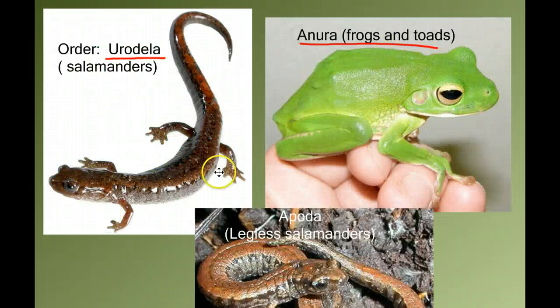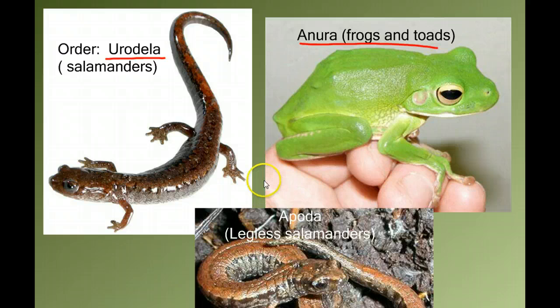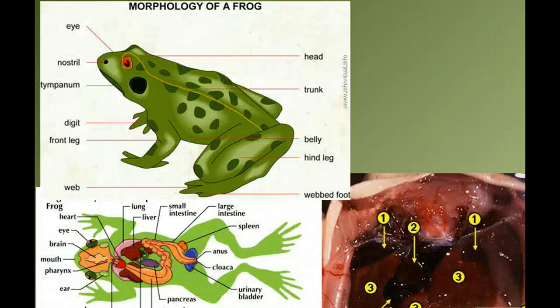While we have these three specific orders, we need to know which ones are which. We're definitely going to use the frog, the Anura, as the poster child to represent all amphibians for us. We'll look at the general anatomy of a frog, for example, to represent amphibians.